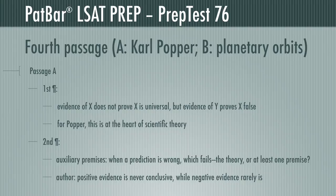Paragraph 2 introduces auxiliary premises that are almost always required for predictions. When predictions fail, the author says more than one explanation is possible, concluding that while positive evidence is never conclusive, it's rare when negative evidence is.